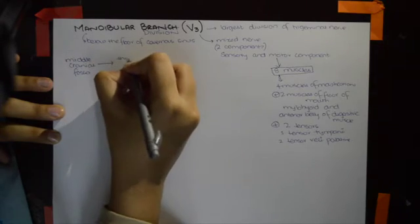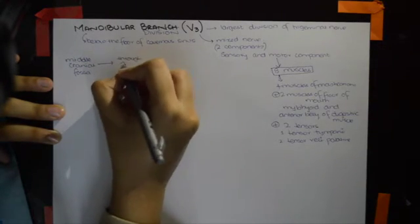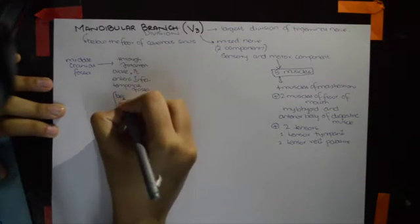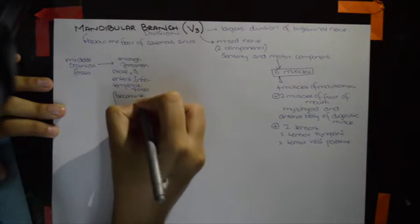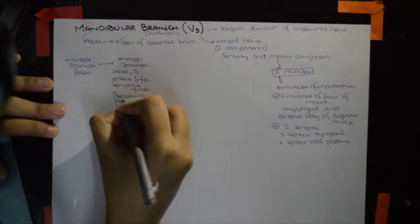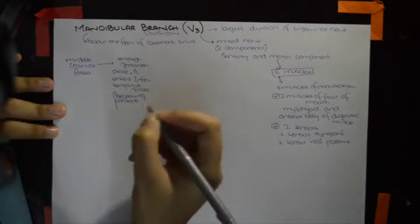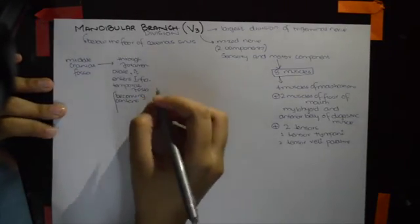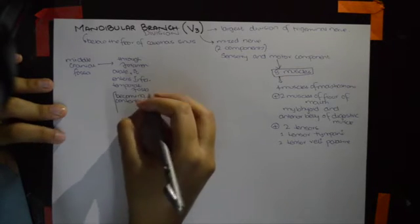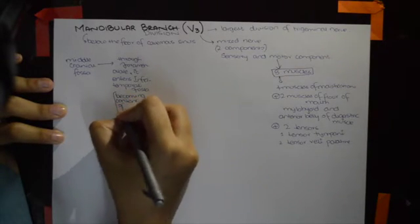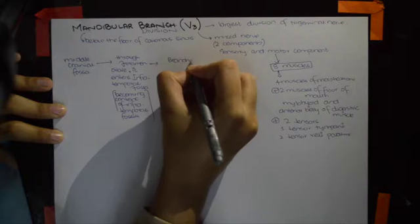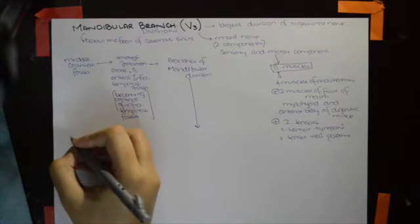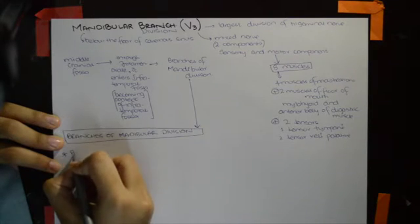Regarding its root, the mandibular division starts in the middle cranial fossa and passes through the foramen ovale to enter the infratemporal fossa. An important point: it becomes a content of the infratemporal fossa.